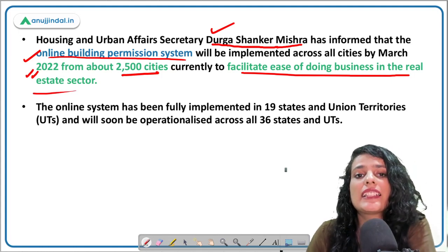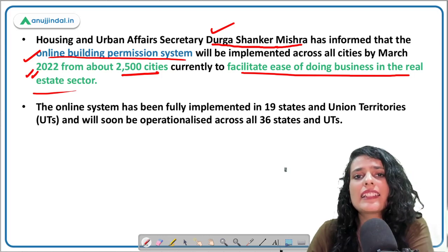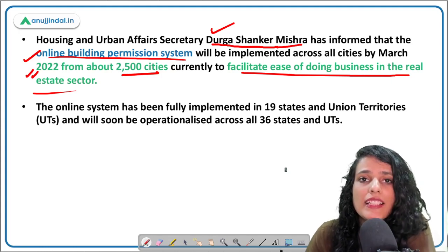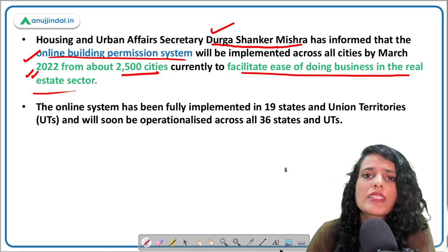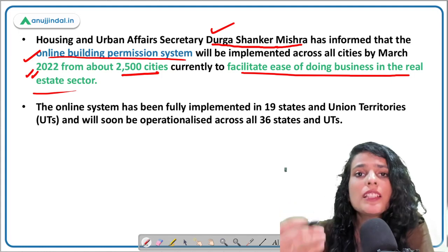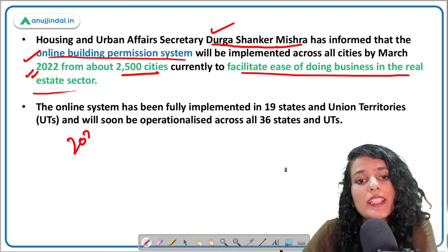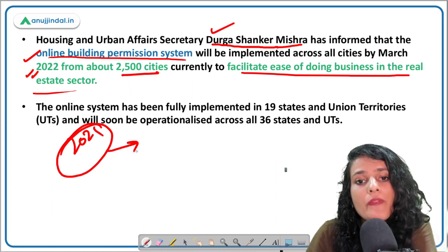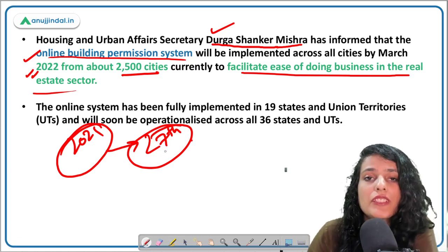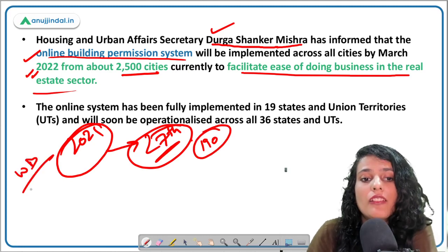Durga Shankar Mishra, Secretary of the Ministry of Housing and Urban Affairs, informed that by 2022, all 2,500 cities will have an established online building permission system to facilitate ease of doing business in the real estate sector. As the name suggests, this system deals with land clearance and construction clearance — all licenses and clearances issued to builders and investors — making them faster, frills-free, and with minimal human interference. Notably, in 2021, the World Bank ranked India at 27th position out of 190 countries in its Ease of Doing Business ranking, a massive jump from 181st position.